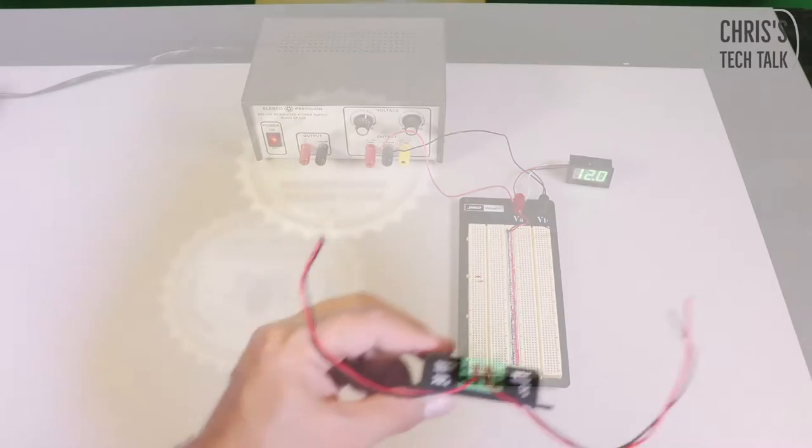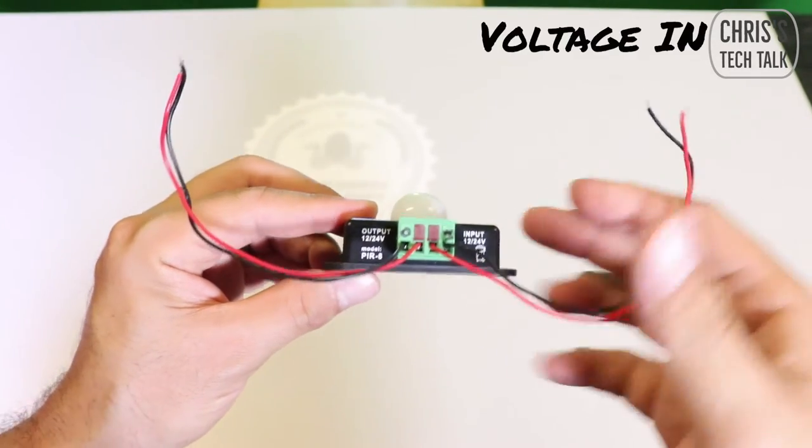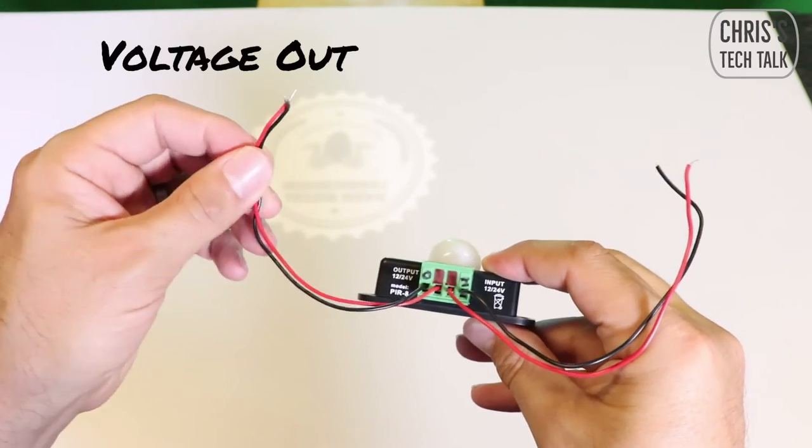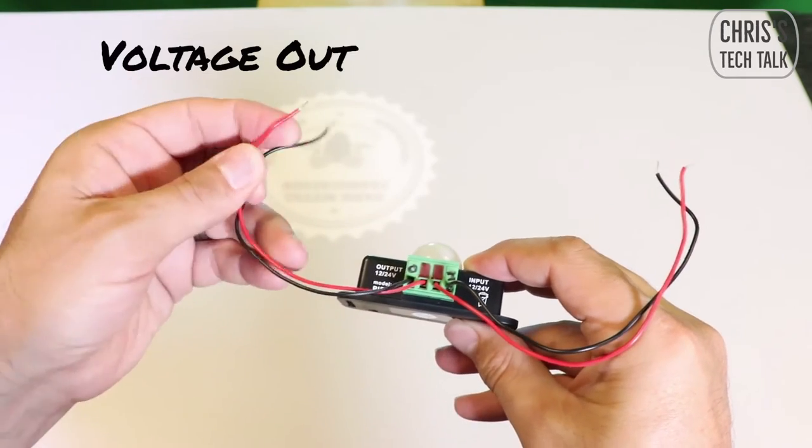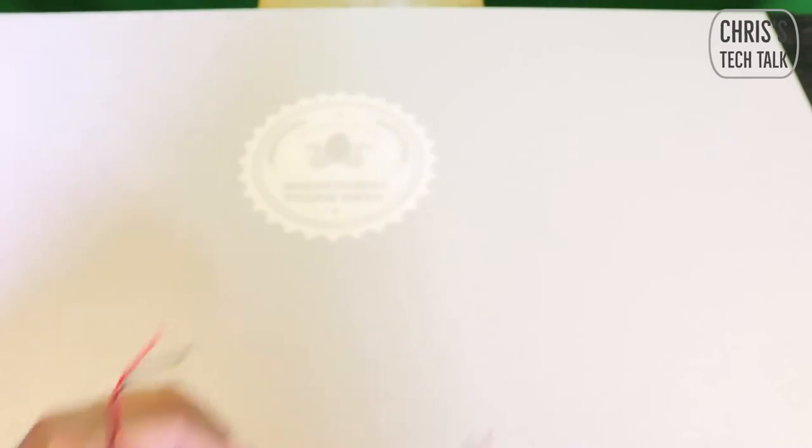Going back to the motion sensor relay, on this side you've got voltage in, on this side you've got voltage out. Again, when this detects motion it turns any device on or off. With this particular relay you can adjust how long it stays on after it detects motion, up to 10 minutes.